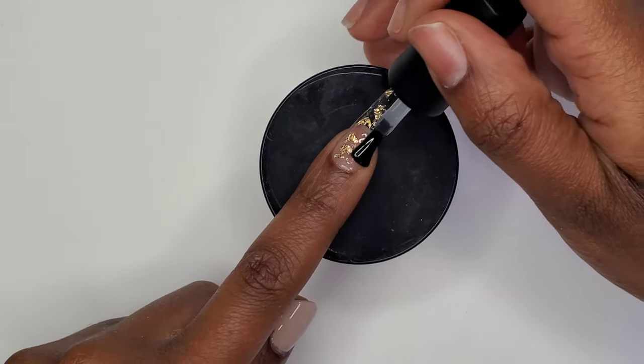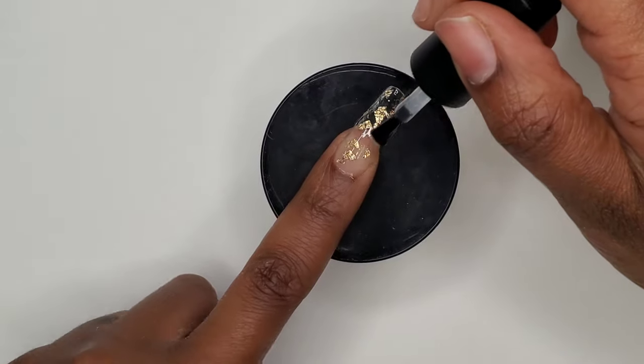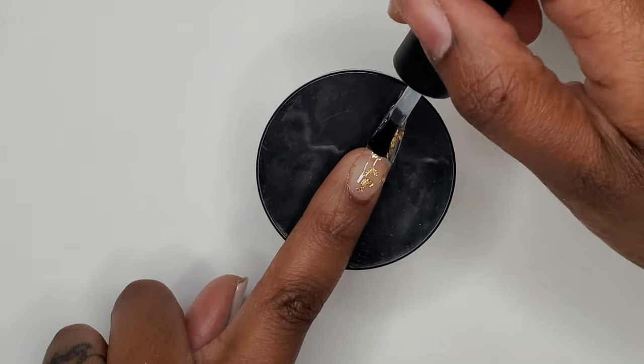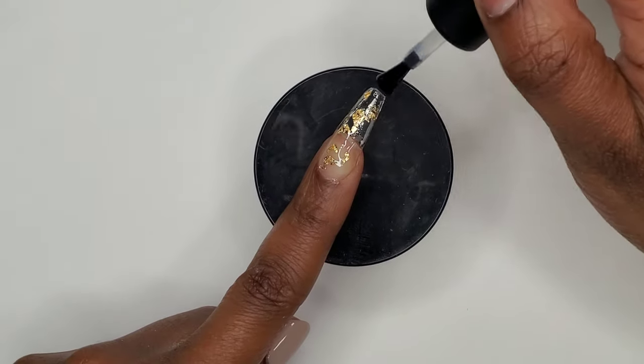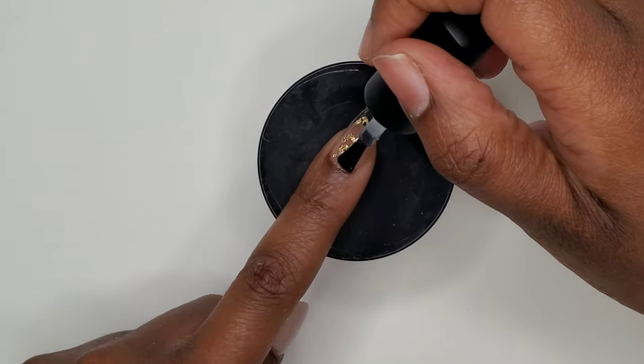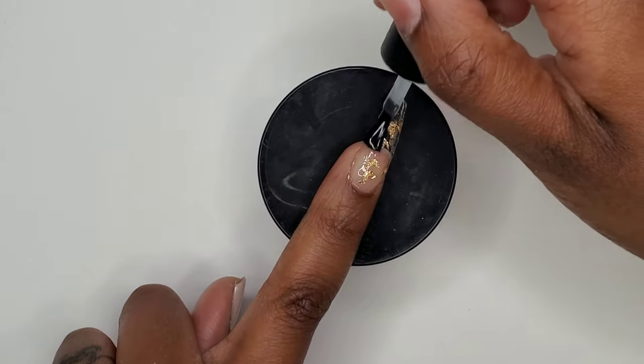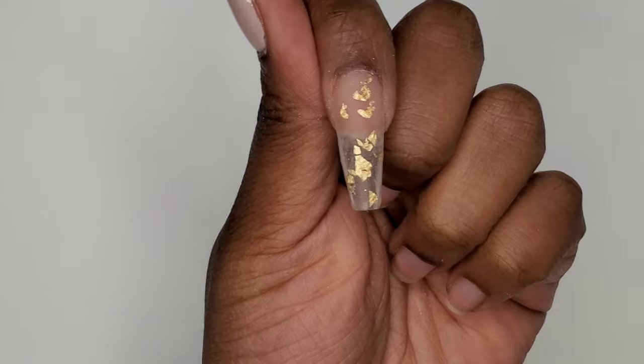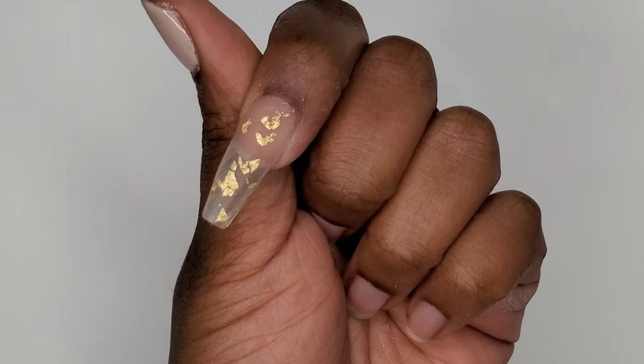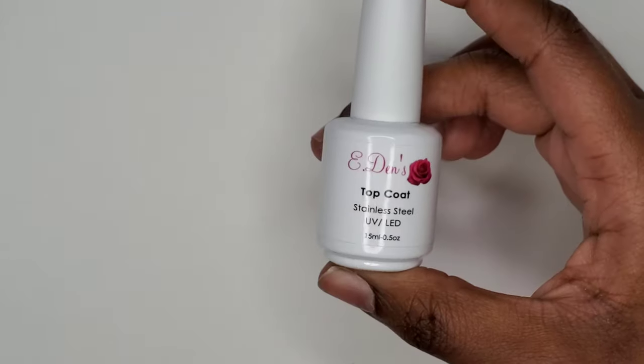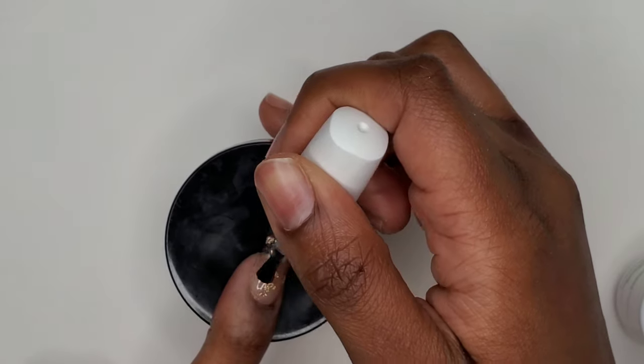Once I finished applying my foil flakes to my liking I cured that first layer now I'm going in with a second layer to cover up or encapsulate those flakes that I just added. After I did that I went back in my lamp for a full 60 second cure. Once I came out of my lamp I did file and buff my nail as you can see here and now I'm going to go in with my top coat.